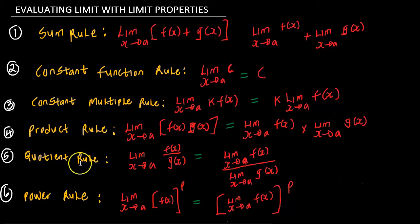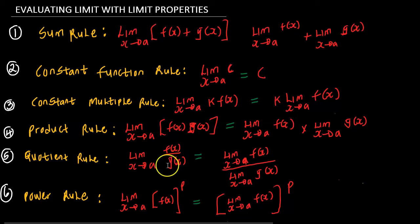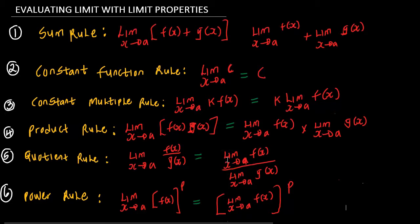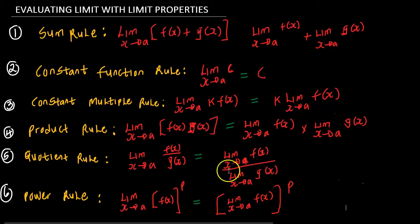The fifth rule is what we know as the quotient rule. This rule states that the limit of the quotient of two functions is the quotient of their limits, provided that the limit in the denominator is not equal to zero. Because if the limit in the denominator is equal to zero, this is going to make the function undefined. So we don't want the limit on the denominator to be equal to zero.